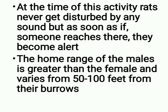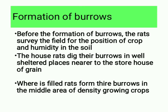Rats never get disturbed by any sound during their feeding activity, but as soon as someone reaches there, they become alert. The home range of the males is greater than the female and varies from 50 to 100 feet from their burrows. Formation of burrows: before forming burrows, the rats survey the field for the position of crop and humidity in the soil.